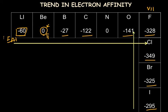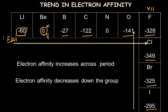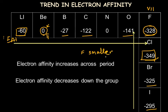Down the group, electron affinity decreases from top to bottom. There are some exceptions, but overall electron affinity increases across the period and decreases down the group. Notably, fluorine's electron affinity is expected to be the highest in Group 7, but it is actually less than chlorine's. This is because fluorine is a smaller atom, and its many electrons packed close to the nucleus repel the incoming electron. Due to this repulsion, fluorine's value is less than chlorine's — an exception to the general group trend.